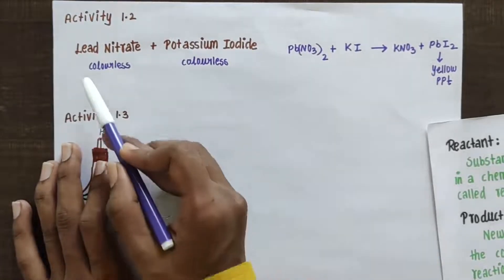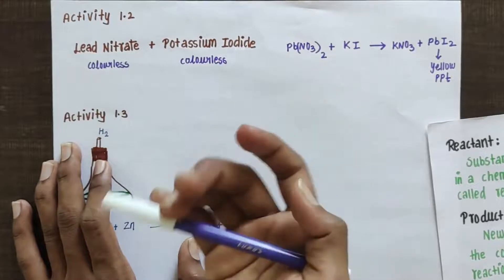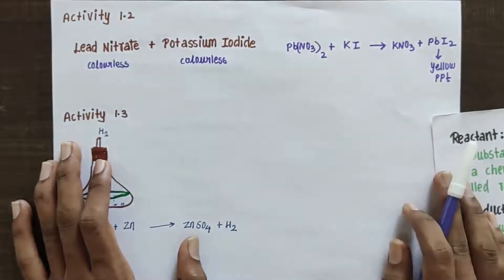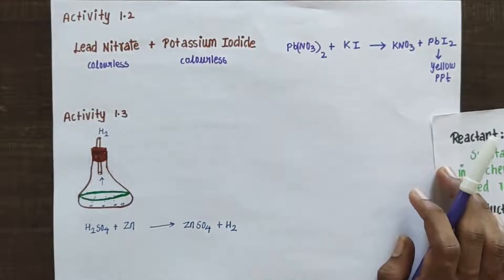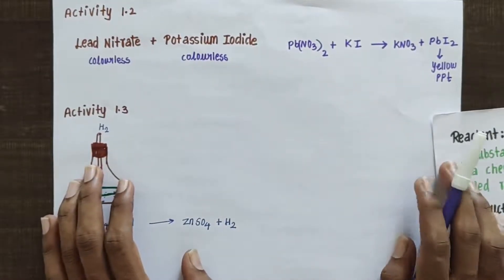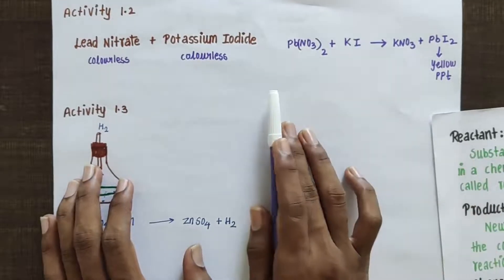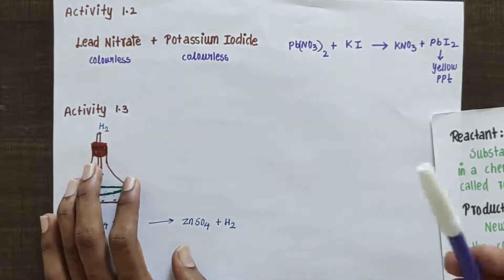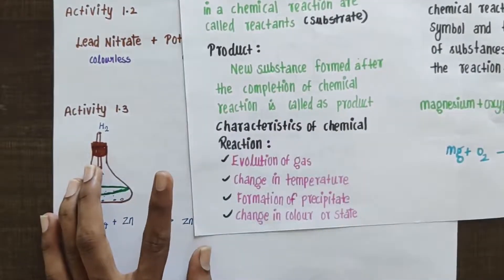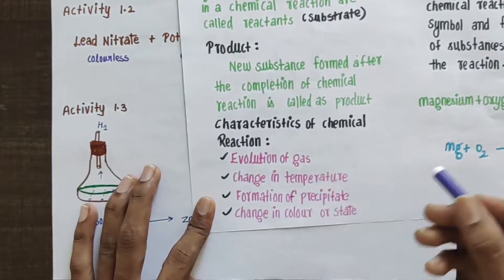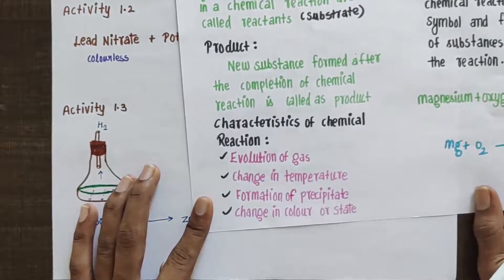You will be able to observe something settling down in the bottom of the test tube — that is your precipitate. So a precipitate has formed, indicating there is a chemical reaction. You are able to demonstrate and prove that formation of precipitate is a characteristic feature of a chemical reaction.